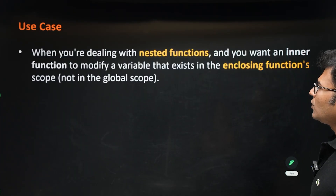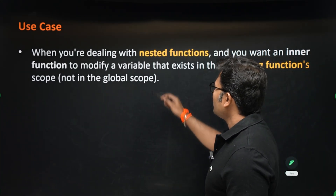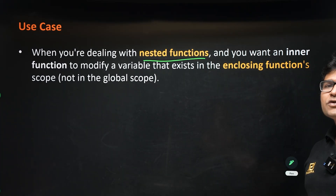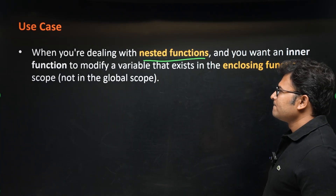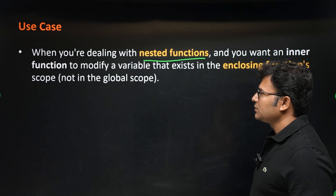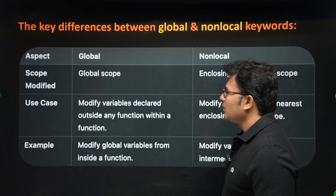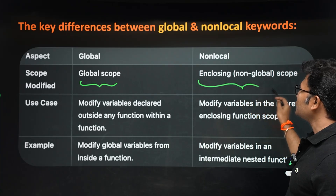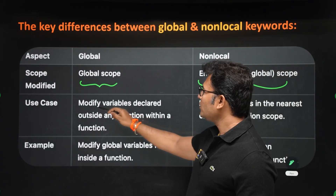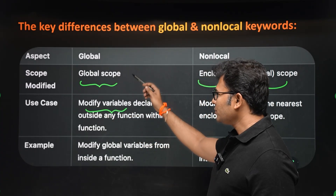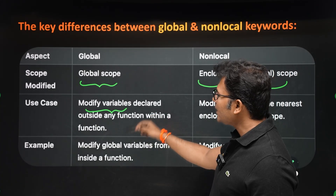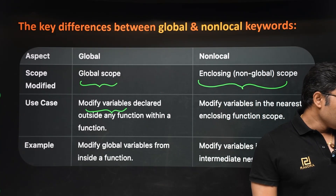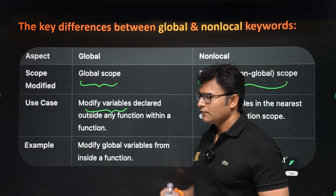To summarize: the non-local keyword is used in nested functions to refer to a variable in the closest enclosing scope — it need not be a global variable. The global keyword gives global scope; the non-local keyword gives enclosing scope. Use global to modify or create global variables; use non-local to modify variables in the nearest enclosing scope of nested functions.